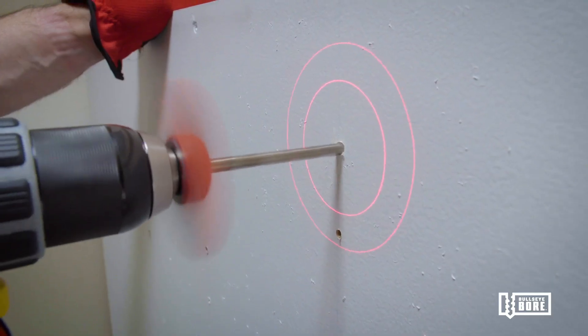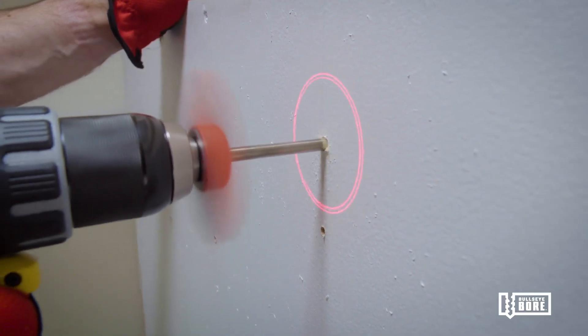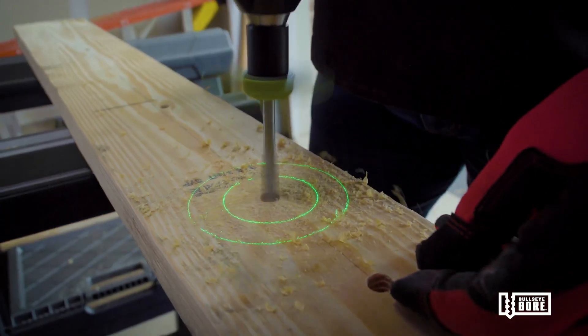When the circles are aligned on the work surface, the drill is straight. Just keep those circles aligned as you drill, and you'll always get a straight hole. It's really that easy.